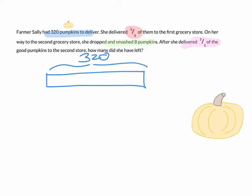Next, we see that three-fifths of them are delivered to the first grocery store. So this tells me I need to chop my bar model into fifths. That's the fractions part.